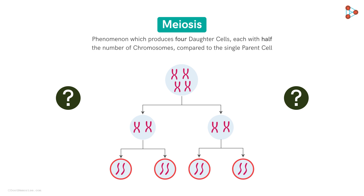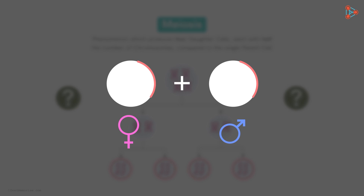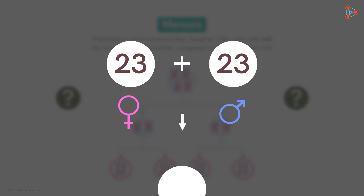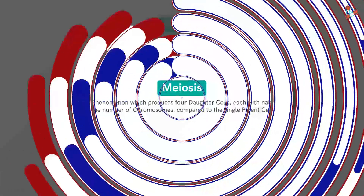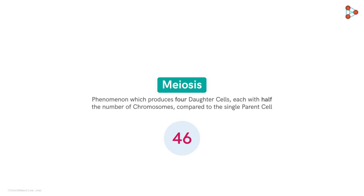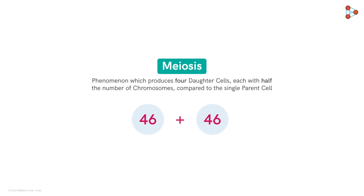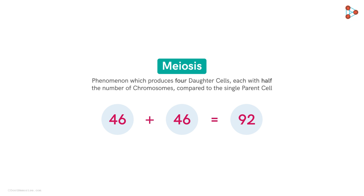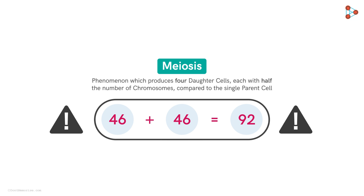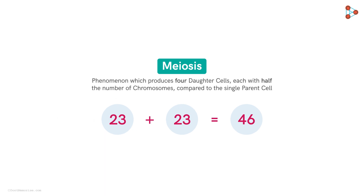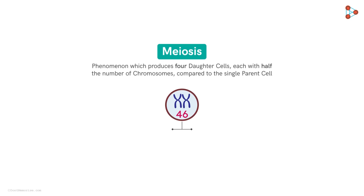Sexual reproduction involves both parents — two cells, one from each parent to be precise. Now if there are two cells fusing, it's obvious that the number of chromosomes should be half in both the cells, so that the fused cell will carry the normal chromosome number. We know that the human chromosome number is 46. So if there are two human cells fusing to give us an embryo, then the newly fused cell will carry 46 plus 46, that is 92 chromosomes. This is simply not possible in nature. So in order to maintain the chromosome number of the species, it is necessary that the two fusing cells contain half — that is, 23 chromosomes. The chromosome number in the fusing cells needs to be halved.